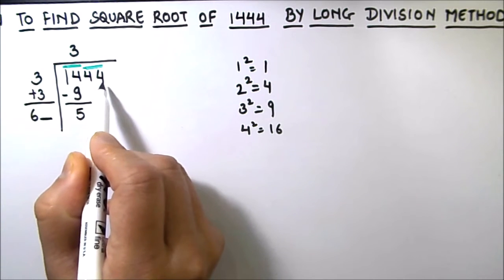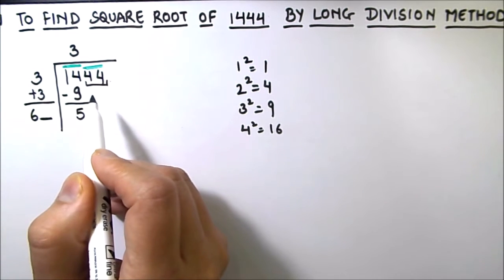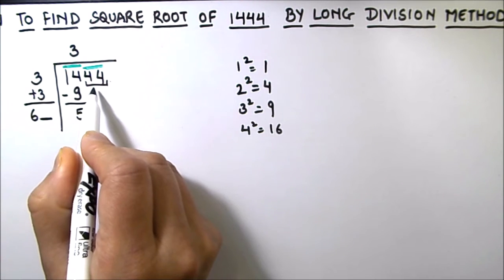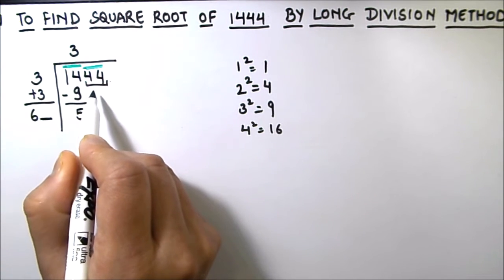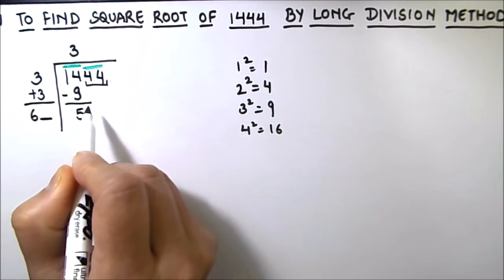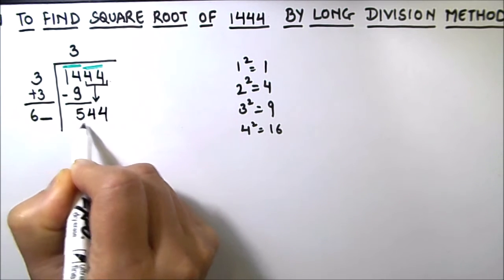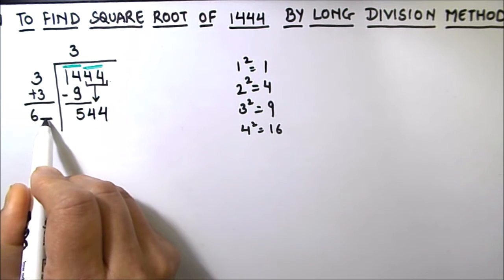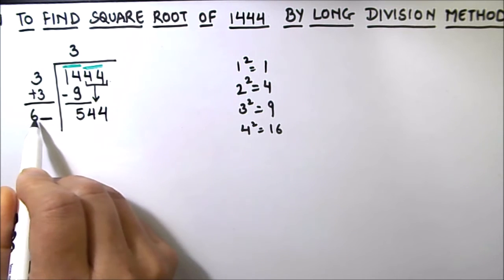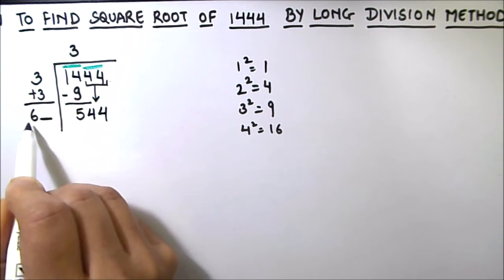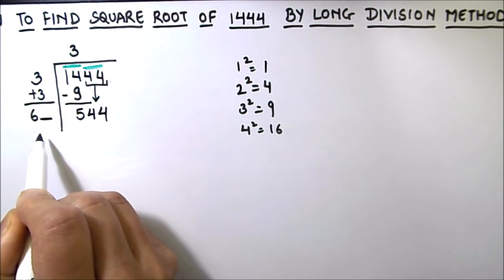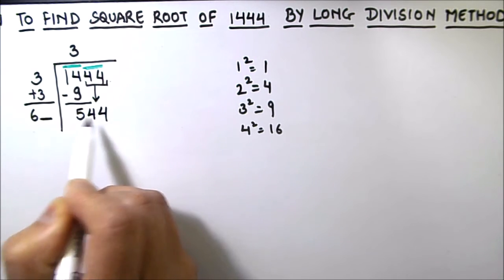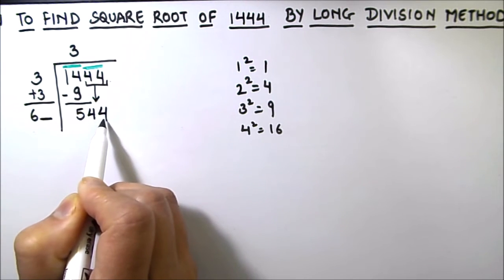Now we will drop down the next pair of digits. So in regular division we drop down only one digit at a time, but here in long division we have to always drop down the digits in pairs. 4 and 4 will come down and this will become 544. Now we have to annex or add such a number in front of 6 so that the product of this combination of numbers with the same number gives the result equal to 544 or just less than 544.